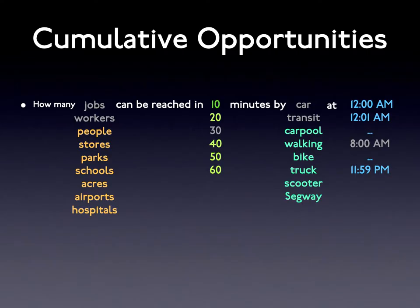Jobs are not the only important destinations, so accessibility can be computed for different places, as well as for different modes, on different days, in different years. If computed consistently with a cumulative opportunities measure, accessibility can be compared and can help explain observations that land values and productivity are higher where access is higher and travel times are lower.